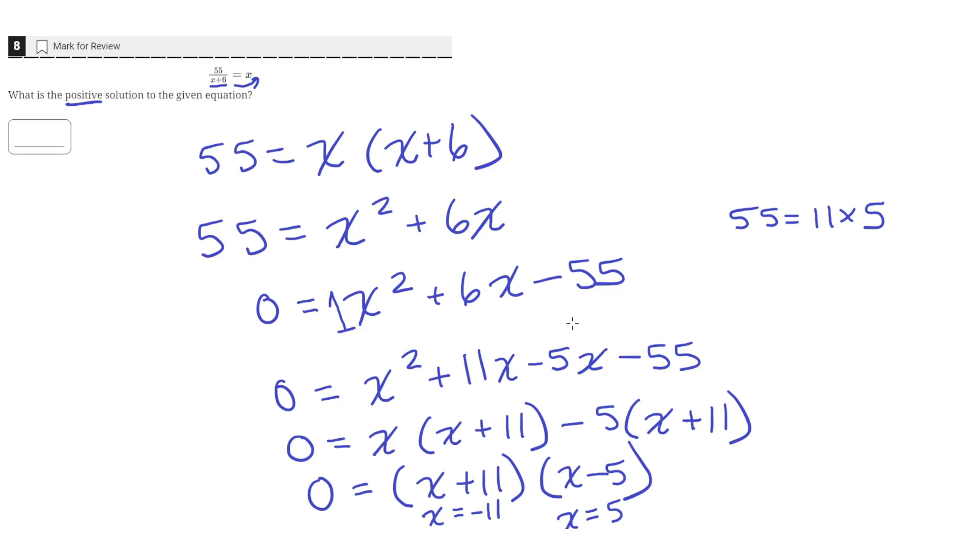Now the question asks us for the positive solution. So we have two solutions here, but only one of them is positive, so we're going to use this positive solution here, x equals 5, as our answer. So x equals 5 is the solution.